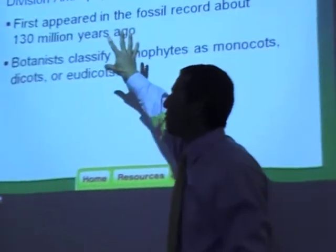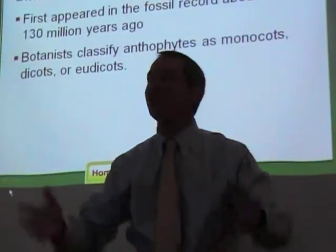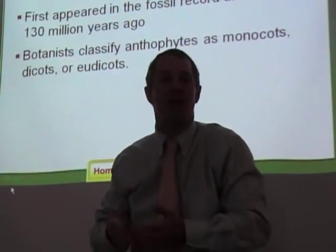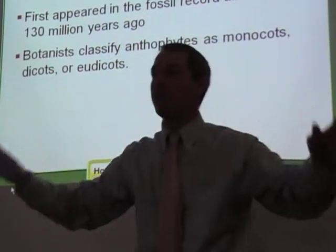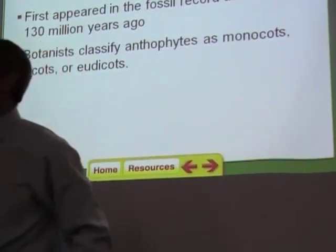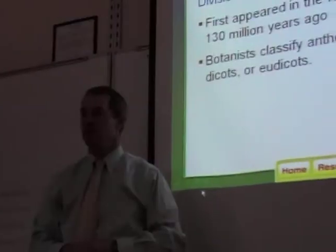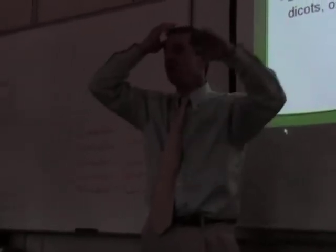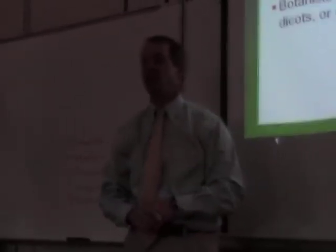That's an advantage. So 130 million years ago, when flowering plants first appeared, they had an advantage over all the conifers in that they didn't have to produce so much pollen — which is wasteful — and they kind of took over. Now there are more species of flowering plants than anything else. You look out the window, most of the green stuff you see is flowering plants. All the grasses are flowering plants.